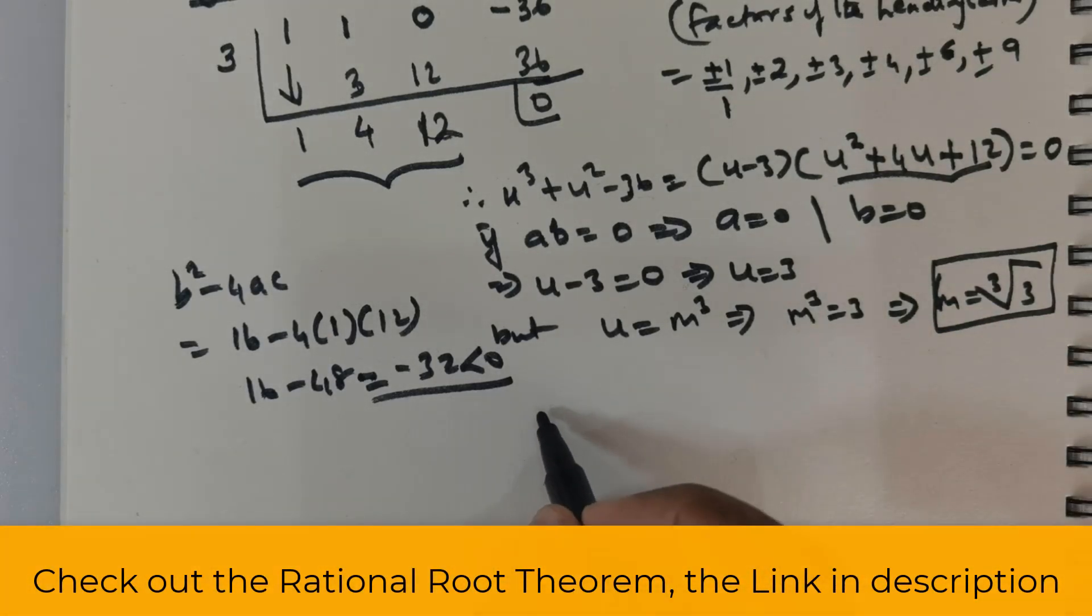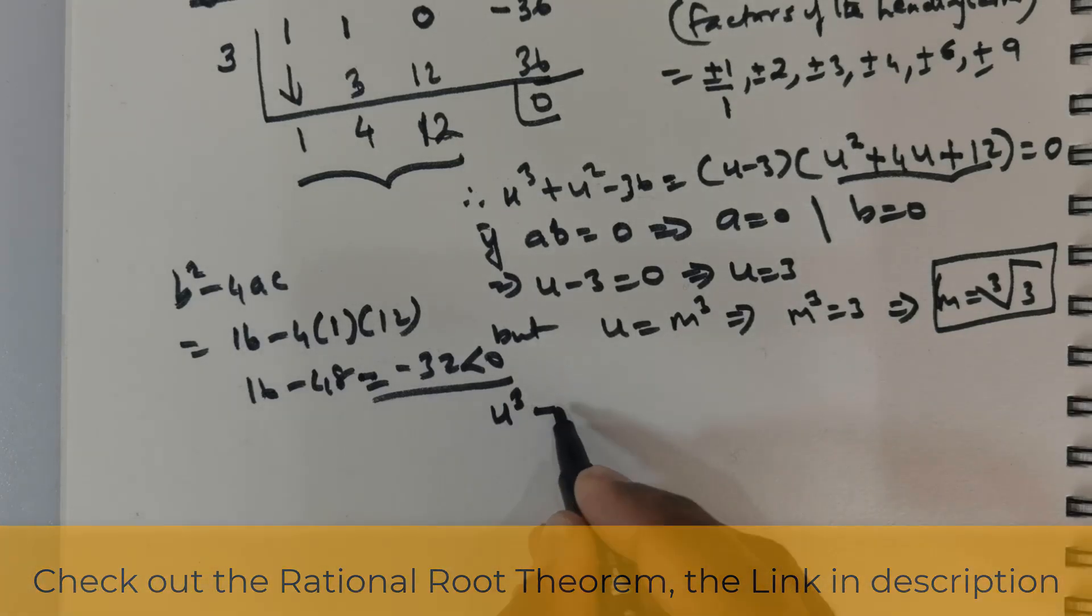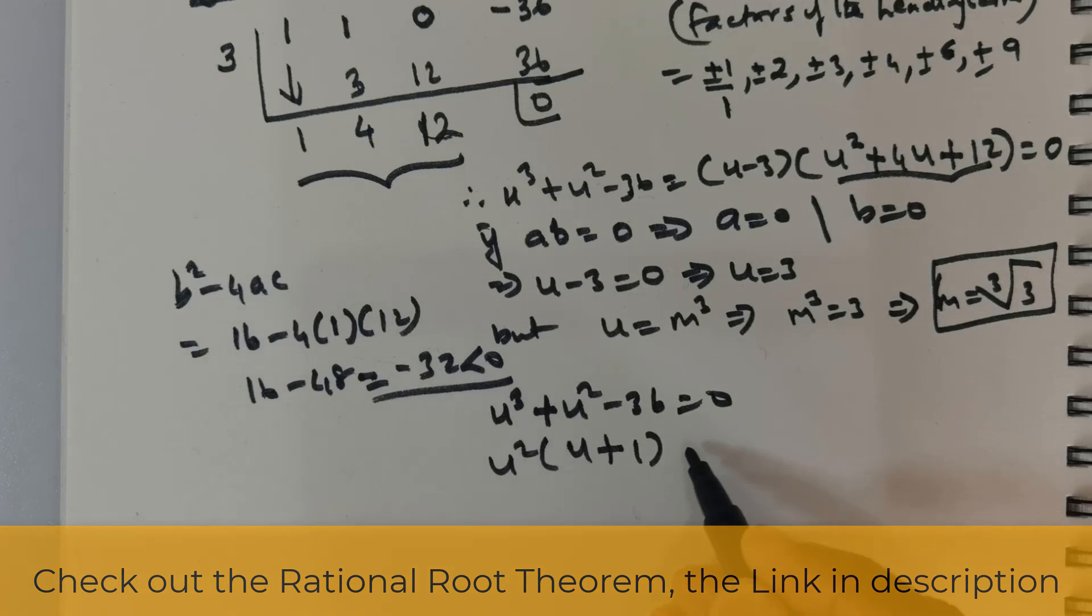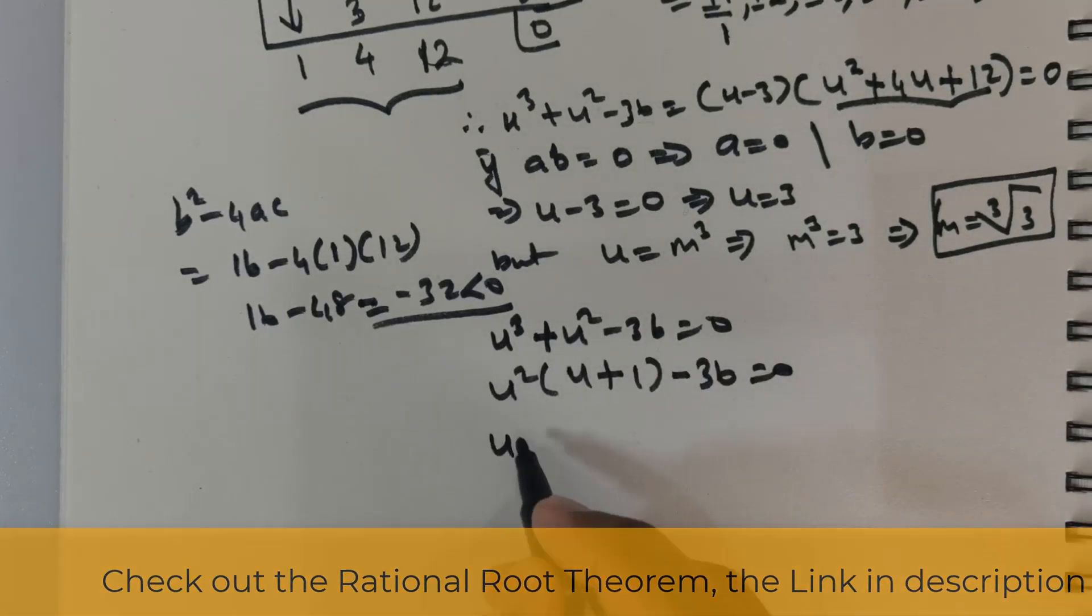Now, alternatively, if you are not interested, this is the other way. Now, having obtained u^3 + u^2 - 36 = 0. You can take u squared out and write this as u^2(u + 1) - 36 = 0. So, you can push this 36 to the other side. So, you get u^2 times (u + 1) = 36.